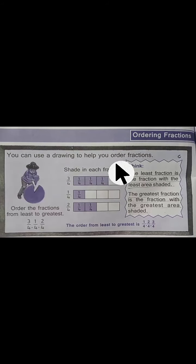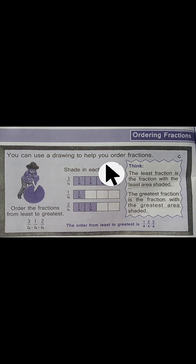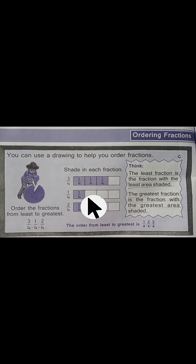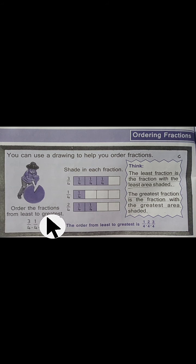That fraction will be greater. Now when you compare fractions, you can also arrange them in ascending and descending order. You have a picture with three strips showing like fractions: 3 by 4, 1 by 4, and 2 by 4. You have to recognize that these are like fractions.